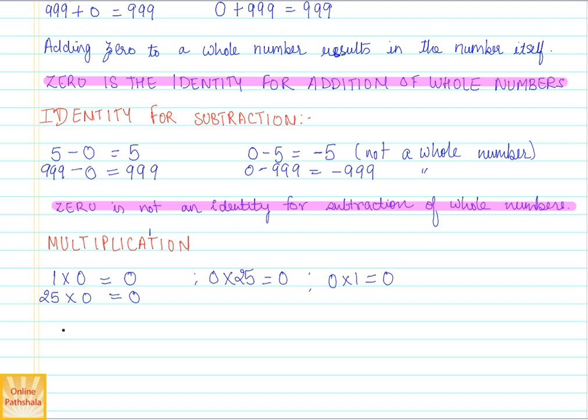Whenever you multiply any number with 0, it results into 0. That is one of the important results. Multiplication of a whole number with 0 results in 0. That is something that you can remember. Let us highlight this result as well.